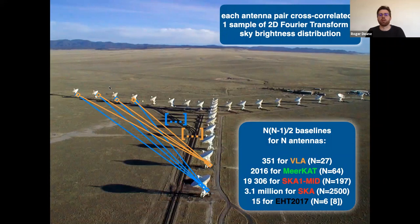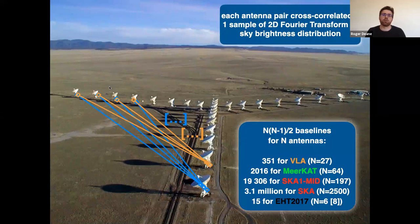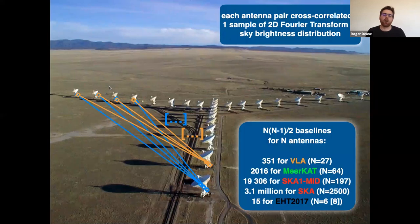The Very Large Array has 27 antennas giving 351 handshakes per unit time per frequency per polarization. For MeerKAT, 64 antennas give 2016 baselines, expanding to 84 with the Max Planck investment. The SKA mid-frequency array in its first phase gives about 19,000, and in full about 3.1 million. By stark contrast, the EHT effectively has only about 15 baselines — far fewer — which is highly relevant to the imaging capability and the science possible.